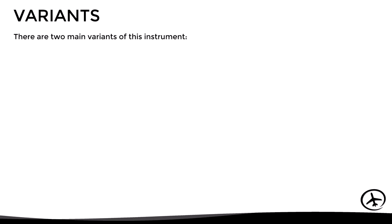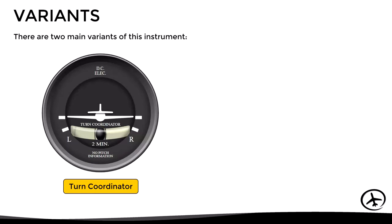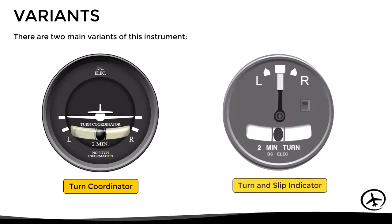With this in mind, it is important to mention that this instrument comes in two main variants: the turn coordinator and the turn and slip indicator. Although both have the same principle of operation, the information they provide and the way it is presented are slightly different.